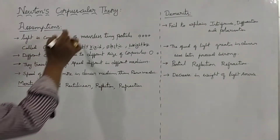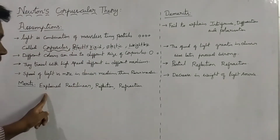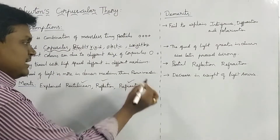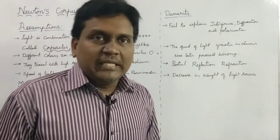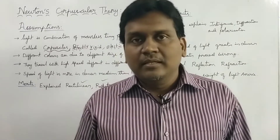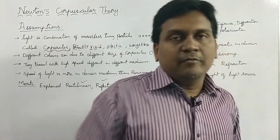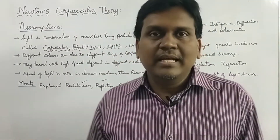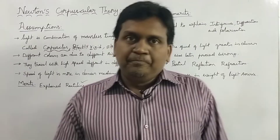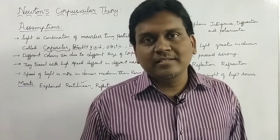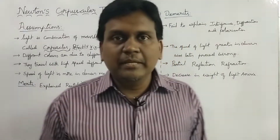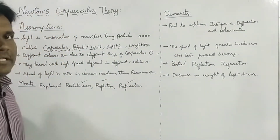These are the assumptions of Newton's corpuscular theory. The merit is that he successfully explained the rectilinear propagation of light, reflection of light, and refraction of light — these three properties of light. Since he assumed light as corpuscles, the corpuscles will travel in a straight line from one place to another, explaining rectilinear propagation. As the corpuscles are elastic in nature — like a rubber ball hitting a wall and coming back — reflection is explained similarly. He also managed to explain refraction by taking the light as corpuscles.